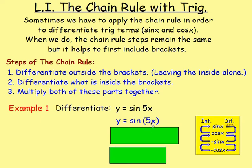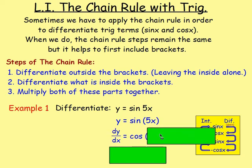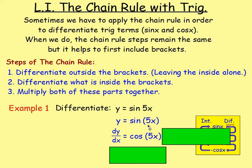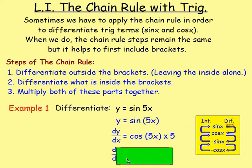Differentiating outside the brackets, we've got the sine of something. Sine goes to cos when you differentiate, so that's going to become cos — keep the brackets just as they are, so it's cos of 5x. However, we've got the brackets, so we're thinking of chain rule: differentiate outside the brackets, then inside, then multiply them together. Differentiate inside the brackets: differentiate 5x and you'd get 5. So multiply the cos of 5x by 5. Put the 5 to the front and write it as 5 cos 5x.